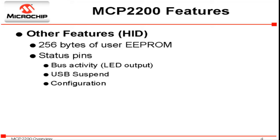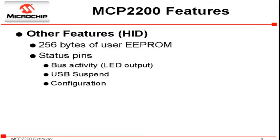The device also has alternate functions multiplexed onto some of the GPIO, which include bus activity LED pins, USB suspend, and a configuration status pin.